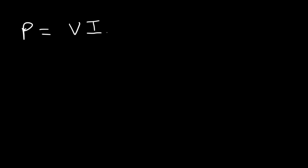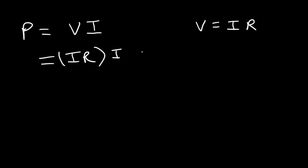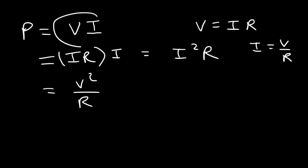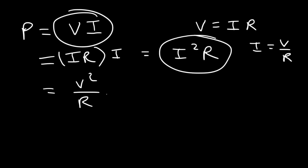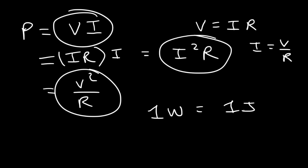The next equation you need to be familiar with is electric power. Electric power is the product of voltage and current. There are three forms: P equals VI; replacing V with IR gives the second form, I squared times R; and replacing I with V over R gives the third form, V squared over R. Power is measured in watts — one watt equals one joule per second.